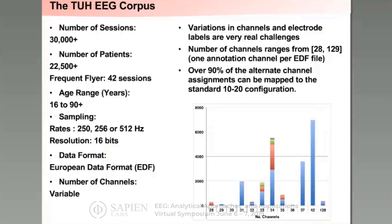With patients who have more sessions available, you can do some longitudinal studies. But most patients — the single largest chunk of the database — are those who come in for short 30-minute EEGs and then you don't see them again. Ages range from about 16 to 90-plus years old. Temple Hospital typically deals with adults or teenage patients. The sampling rates vary from 250 Hz to as high as 1,000 Hz, with most data falling in the range of either 250, 256, or 512 Hz.